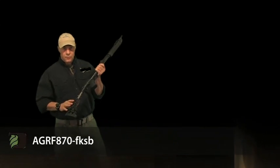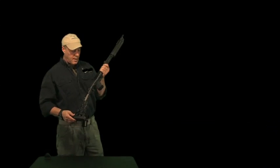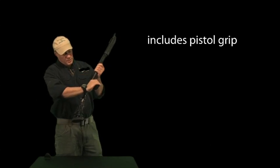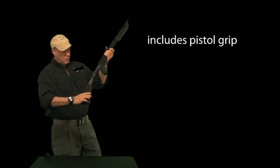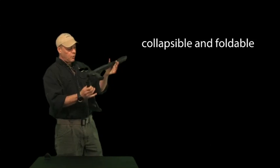This is a stock for Remington 870, Mossberg 500, 590. The stock comes with the pistol grip. It's collapsible, it's like the AR, it's foldable.